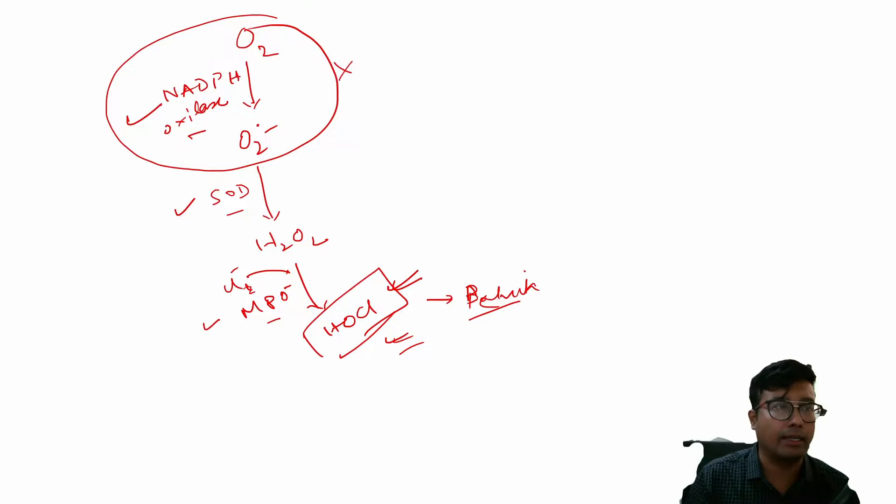However, consider the case where NADPH oxidase is deficient that happens in chronic granulomatous disease. Then the downstream processes will not happen means there is no generation of H2O2, there is no generation of HOCl.